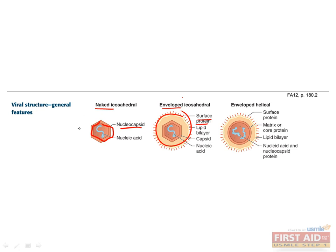The capsid can take on an icosahedral shape — a symmetric polyhedron with 20 identical equilateral triangle faces — or a helical shape. The viral envelope is composed of lipoprotein membrane and is acquired from the host plasma membrane during the virus's non-lytic release from the host. Exceptions are the pox virus, which acquires its envelope from the Golgi in the cytoplasm, and herpes virus, which acquires its envelope from the nuclear membrane. The envelope contains virus-encoded glycoproteins, which give the virus its ability to attach to host cells and initiate infection, and also stimulate antibody production by acting as antigens.